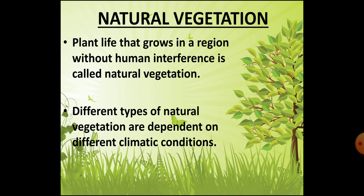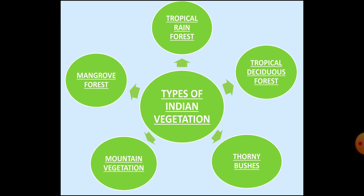Now from the climate, let us move our attention towards the natural vegetation of India. When plant life grows on its own in an area without any human interference or efforts, it is called natural vegetation, also called the flora of a region. Natural vegetation varies with relief and climate — the vegetation found on mountains is different from that found on plains, and plants in the desert vary from those in wet and humid places. Since India has a variety of climatic conditions, a large range of natural vegetation is found here, which can be divided into five types: tropical rainforests, tropical deciduous forests, thorny bushes, mountain vegetation and mangrove forests.